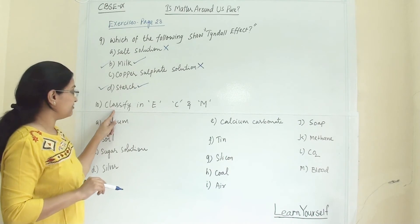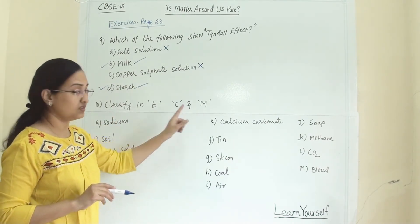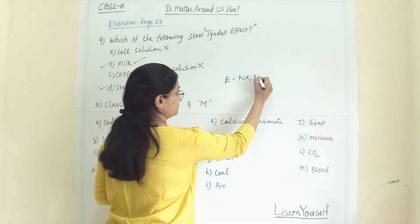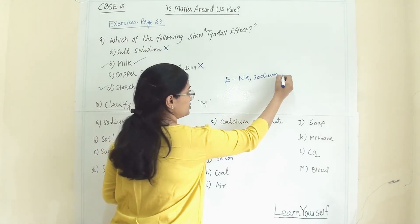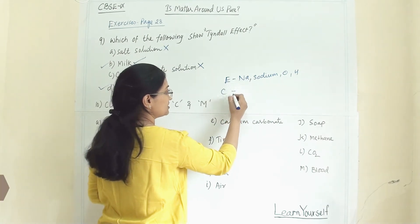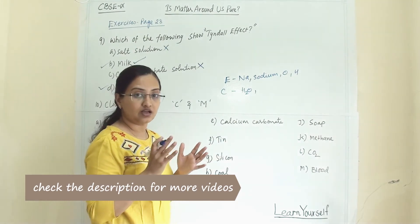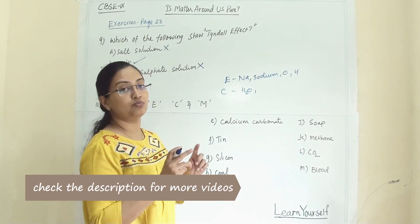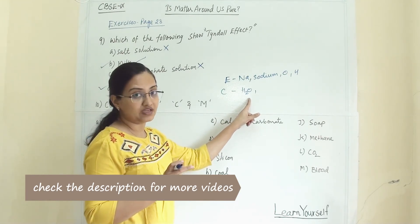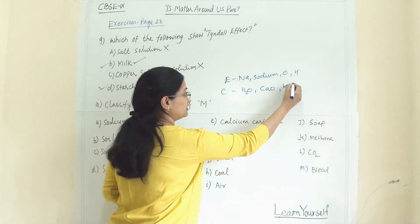Classify the following into element, compound, and mixture. Elements are pure substances made of one kind of atom — for example, sodium, hydrogen, oxygen. Compounds are formed when two or more elements combine chemically, such as H2O, calcium oxide (CaO), and KCl.